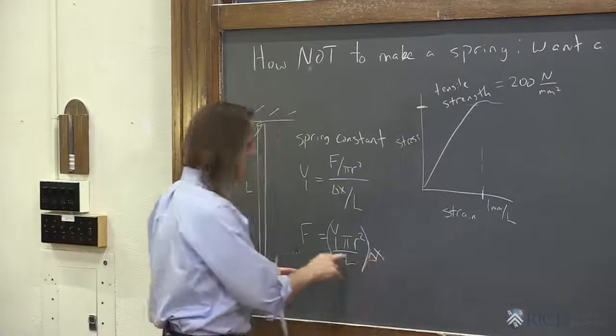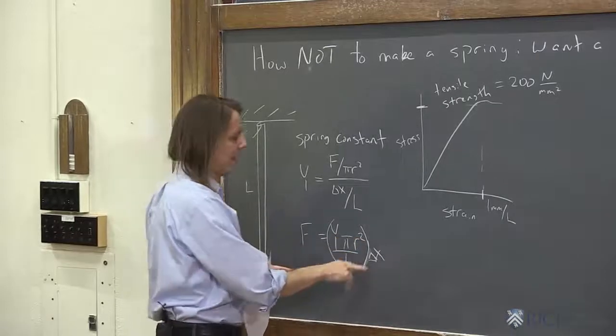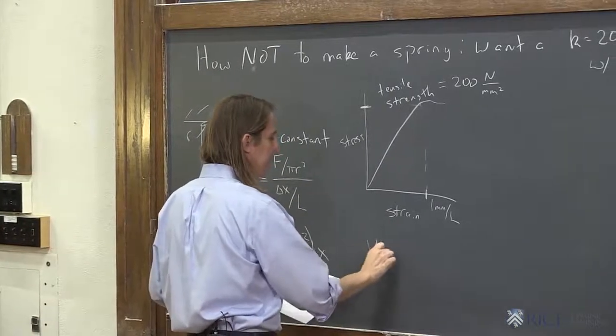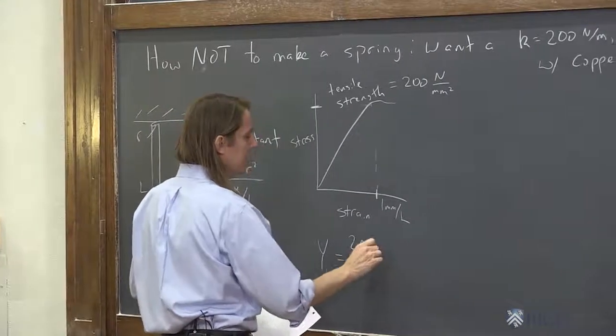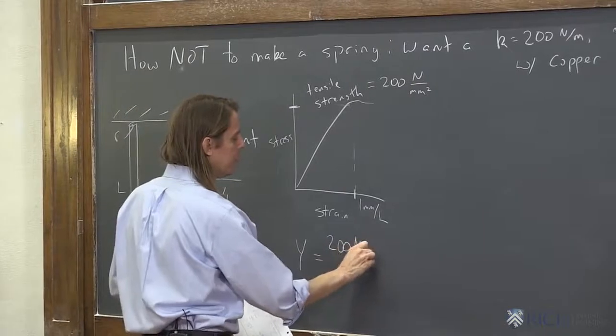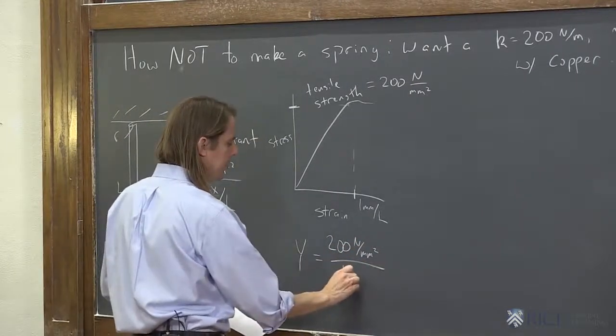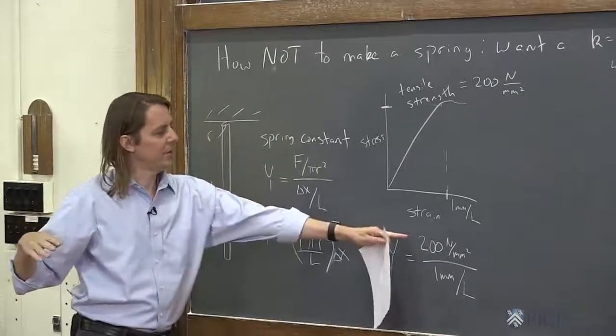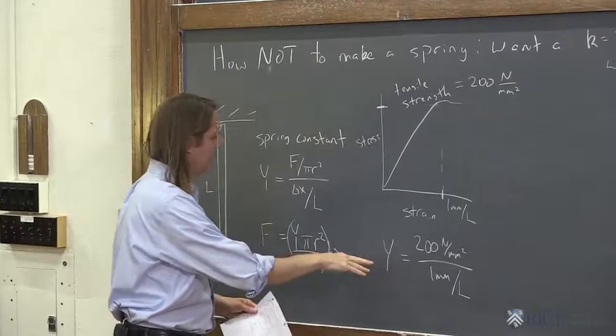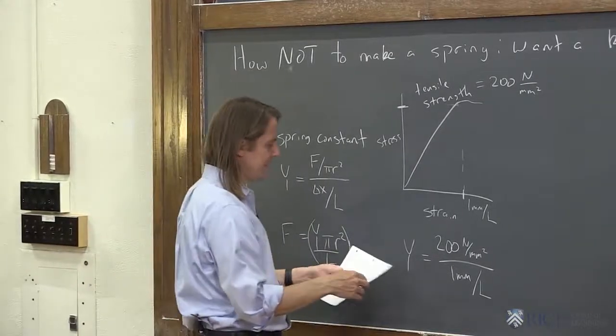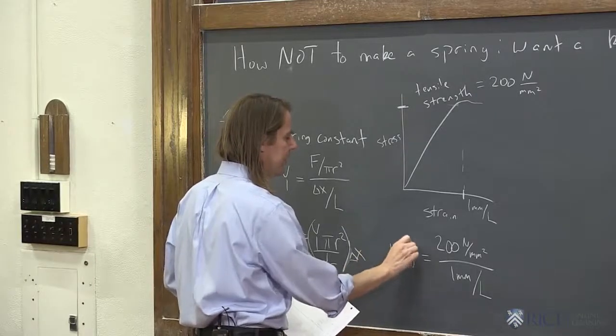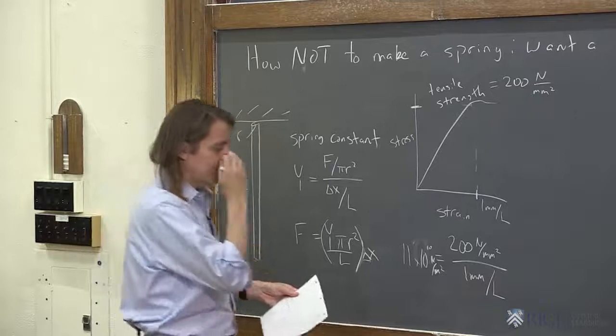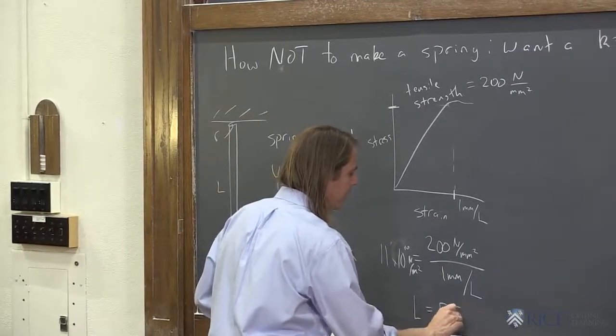So what we would have to do to figure out, maybe we'll be able to get the length. This doesn't depend on the area, it just depends on the length and delta x. So what we could say is we want a case where our Young's modulus equals that maximum stress, 200 newtons per millimeter squared, over the delta x we wanted, one millimeter over L. What we're finding out is how long does it have to be to stretch it by a millimeter without hitting 200 newtons per millimeter squared. The Young's modulus we could plug in, it's 11 times 10 to the 10 newtons per meter squared. Paying attention that that's millimeters and that's meters, you get that the length needs to be 5.5 meters.